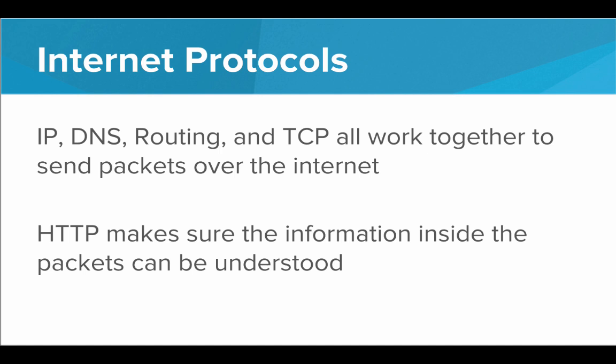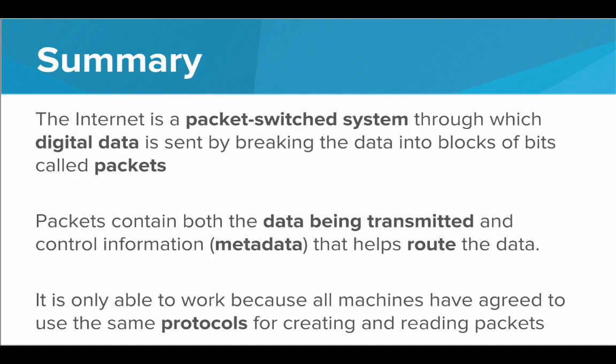So IP, DNS, routing, and TCP all work together to send individual packets over the internet. HTTP makes sure the information inside those packets can be understood — it defines the language for requesting and receiving resources on the internet. In summary, the internet is a packet-switched system through which digital data — binary zeros and ones — is sent by breaking the data down into tiny blocks of bits called packets. Packets contain both the actual data being transmitted and the control information, the metadata that helps route the data: the from address, the to address, the packet number. All of this is only able to work because all devices on the internet have agreed to use the same protocols for creating and reading packets. That is the story of the internet.